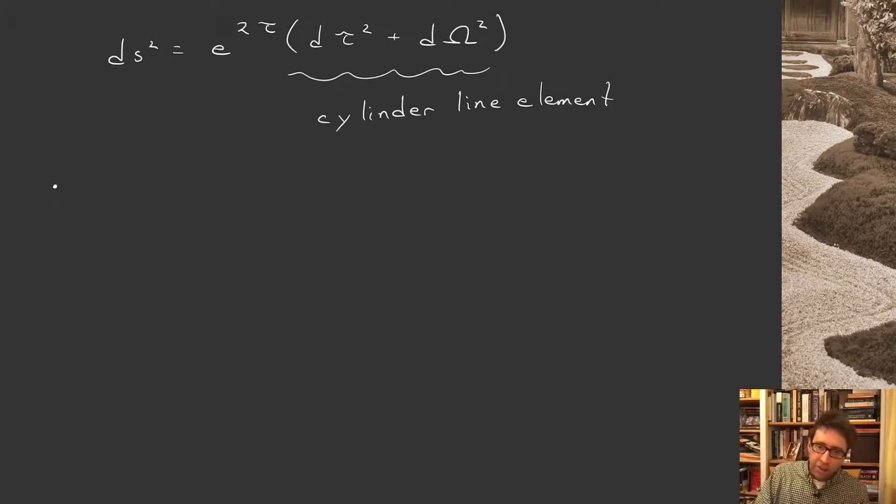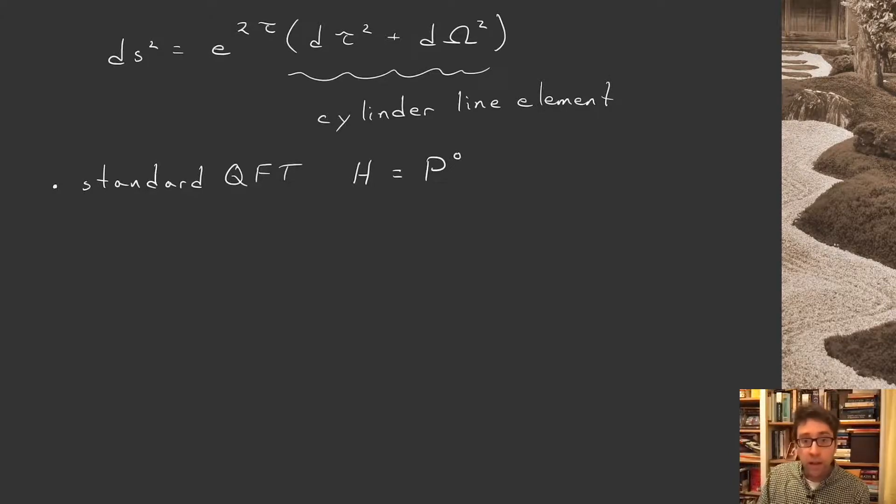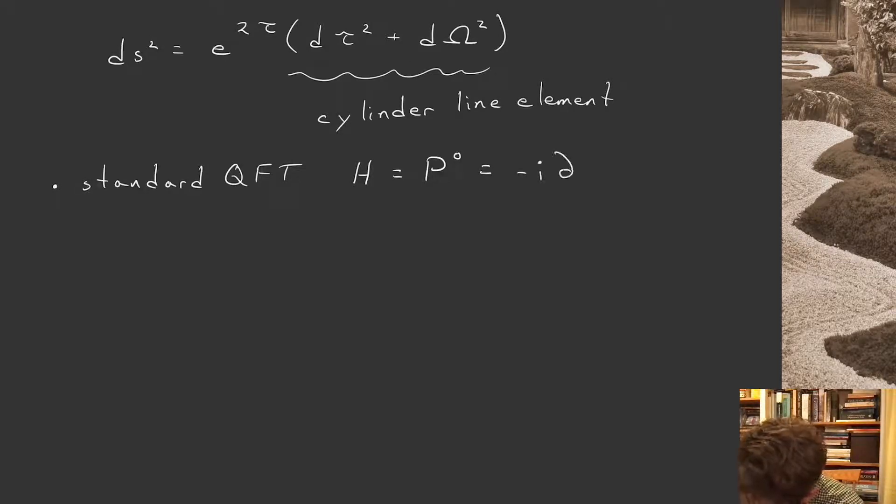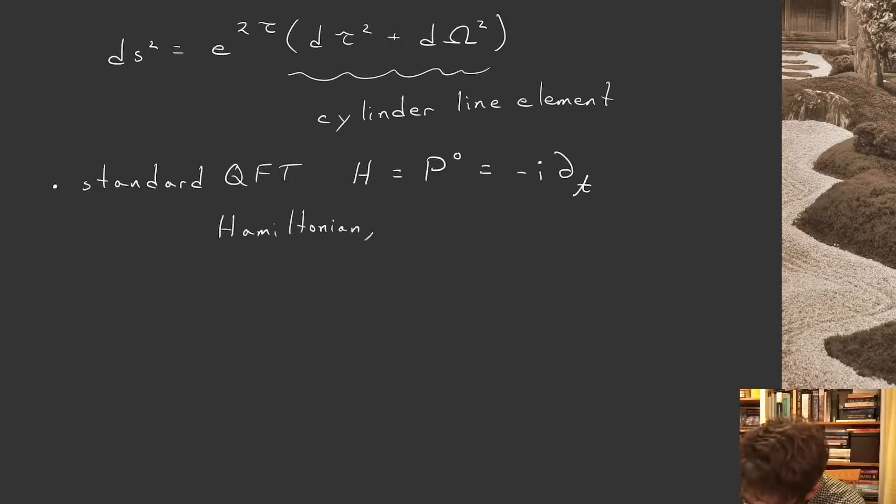Okay, so let's go back again to standard QFT. I'm trying to build here off your knowledge of standard QFT in order to take the next step to think about what radial quantization means in CFT. So in standard QFT, I have a Hamiltonian, which is the energy, which I can also think about as the time component of the 4-momentum, which we also wrote as -i∂_t in one of the first lectures in this module. So in standard QFT, this is the Hamiltonian, and it generates time translations.